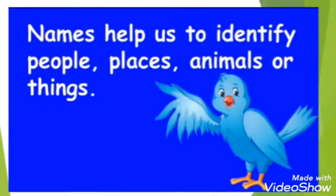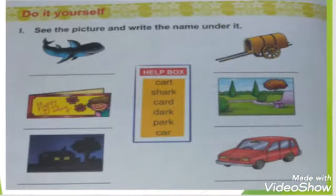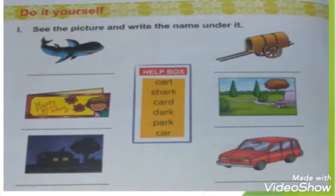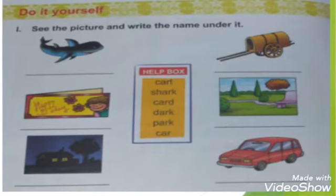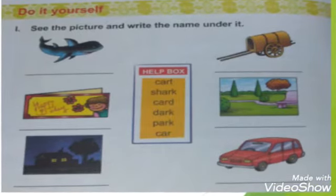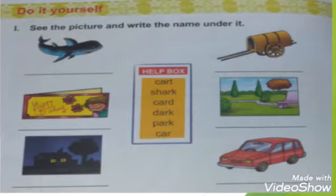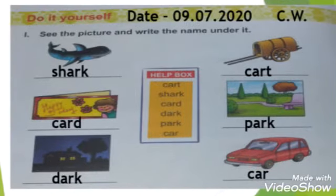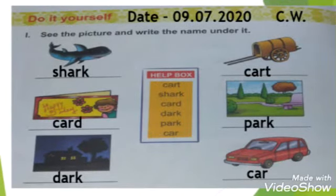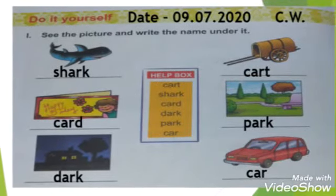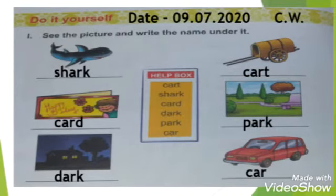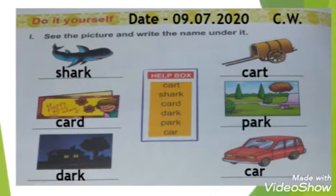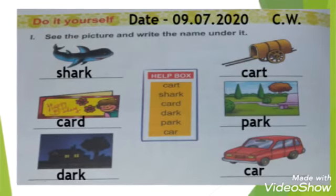Now we will open our reader book, page number 20, and we will do question 1: see the picture and write the name. We will write down the date first, then CW, and now we can see there are many pictures. In the same way, you will write in your book also.